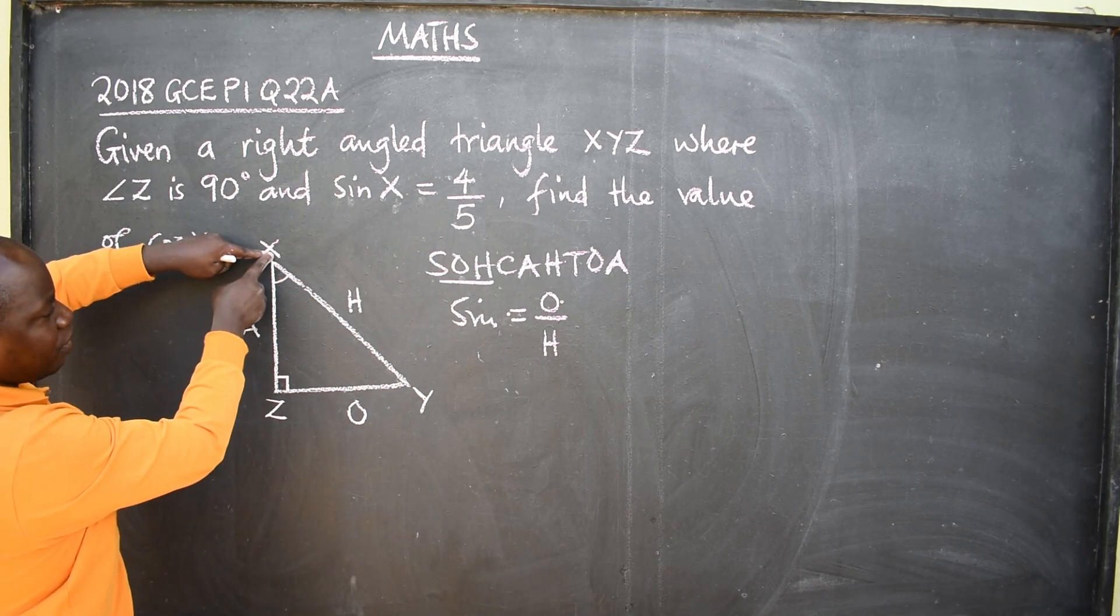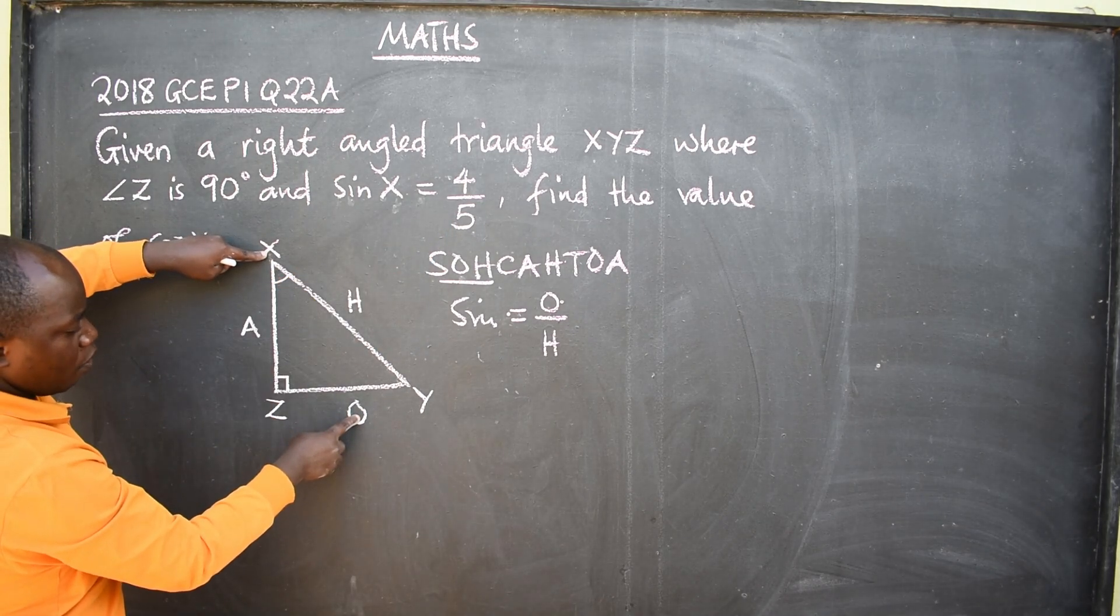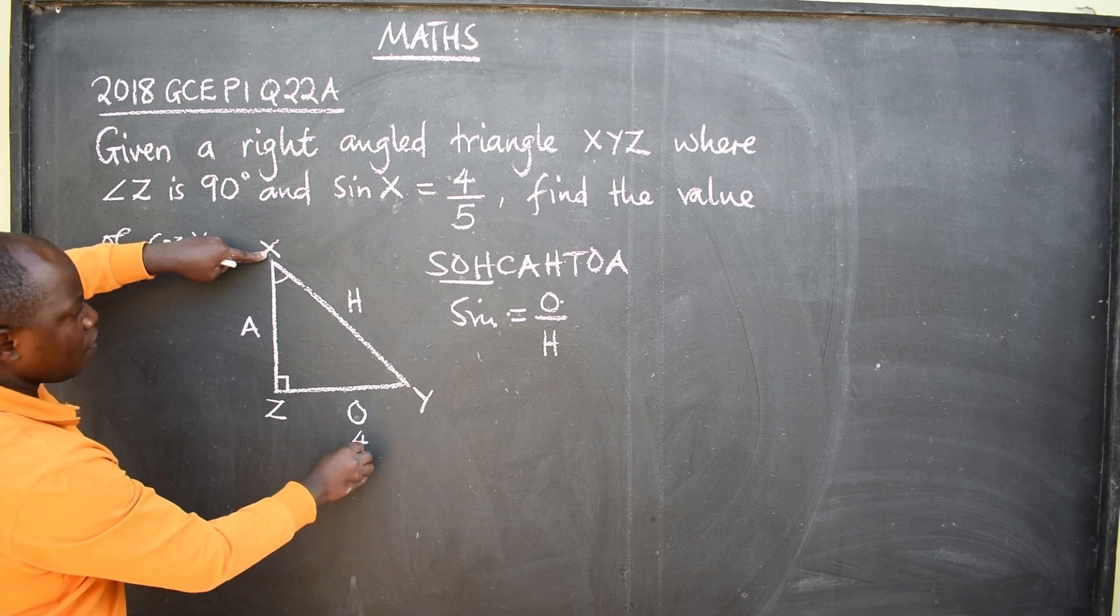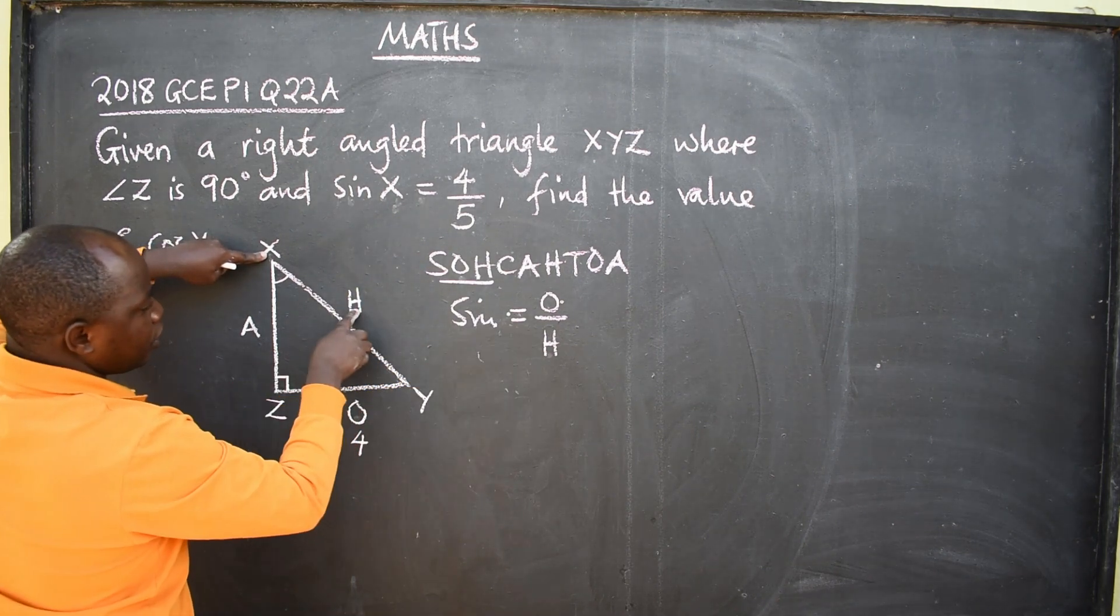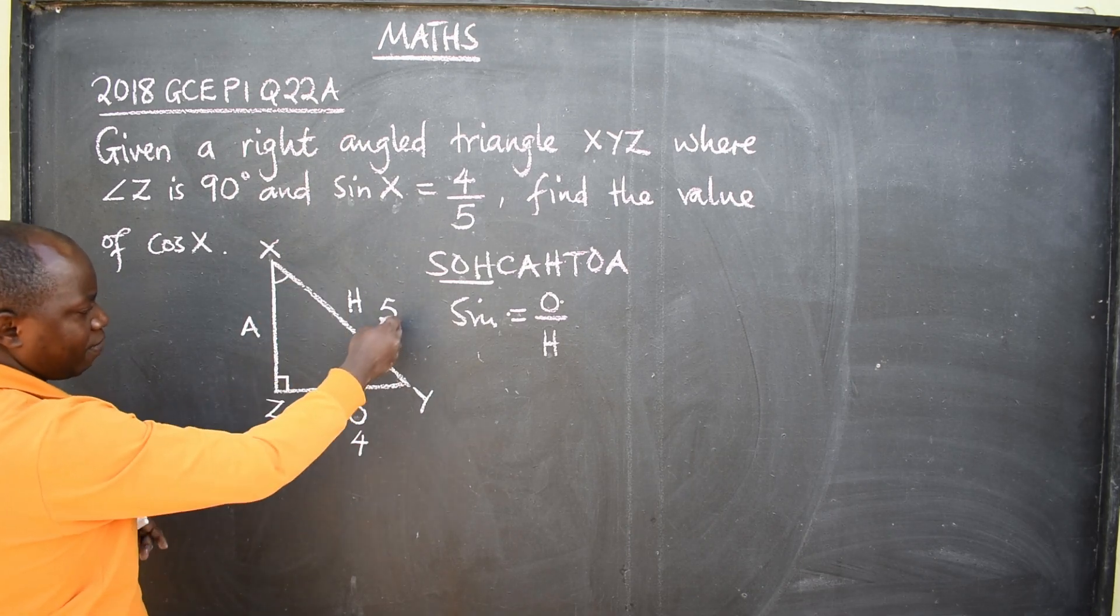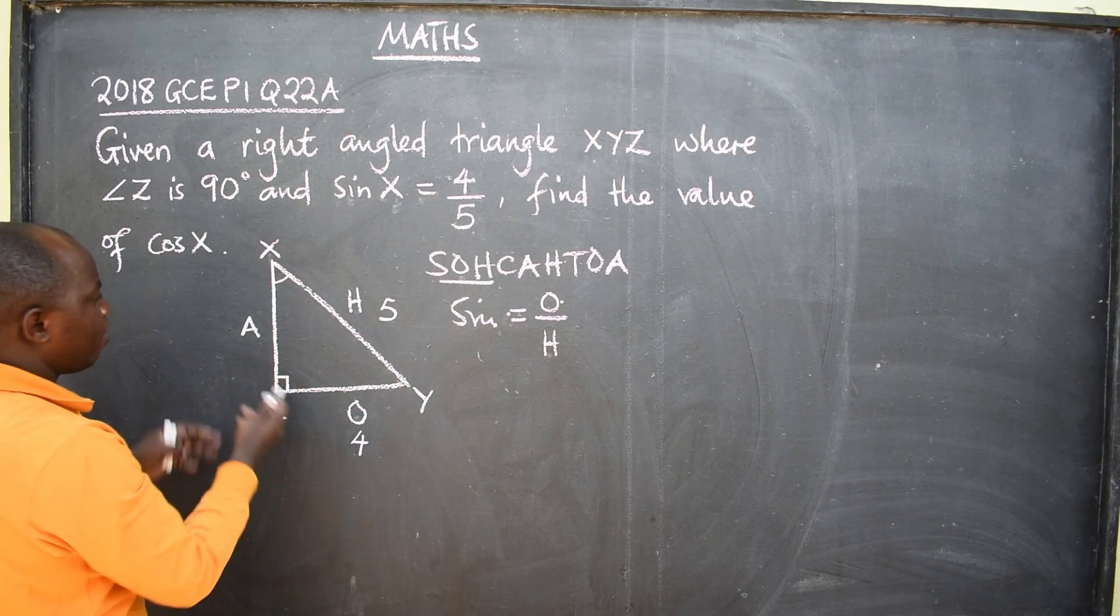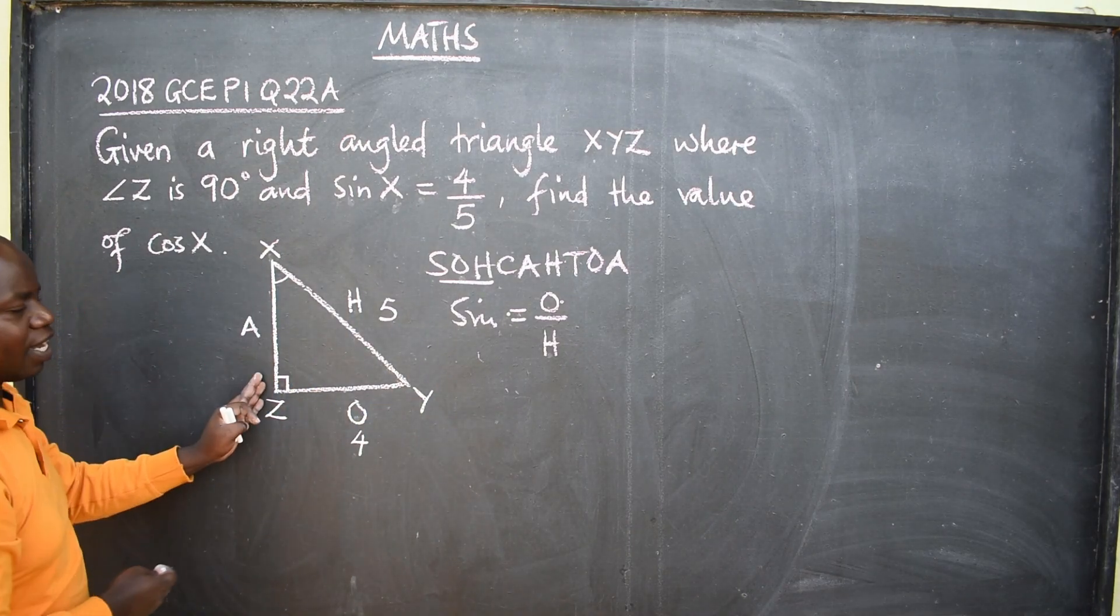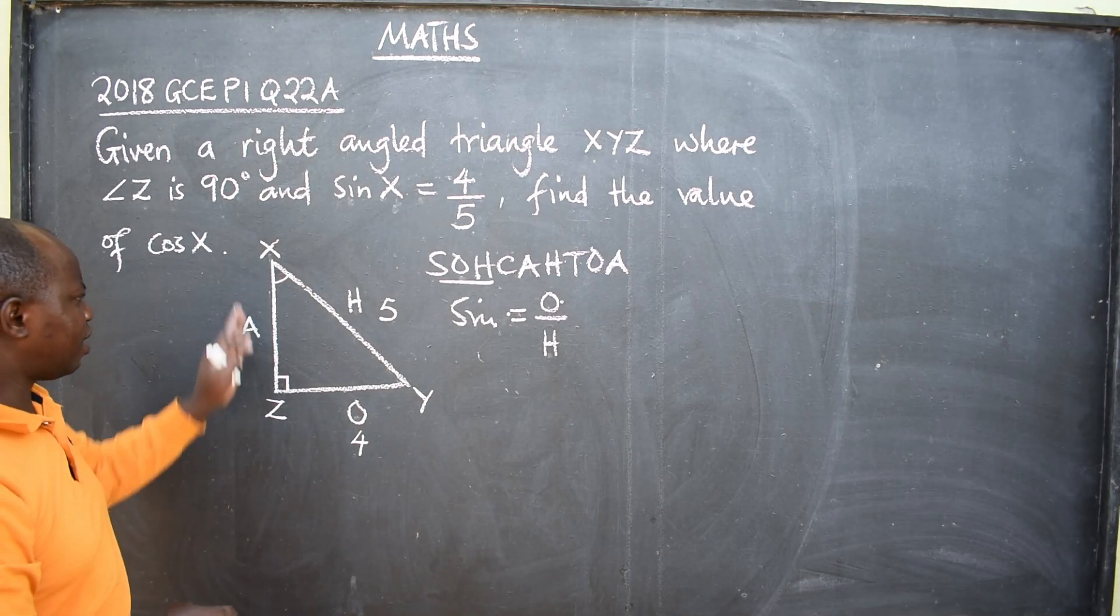Meaning the angle is here. Where there is O here, it is 4. Then H, it is 5. So this length is 5, this length is 4. Then we need to find this length here. How do we find this length?